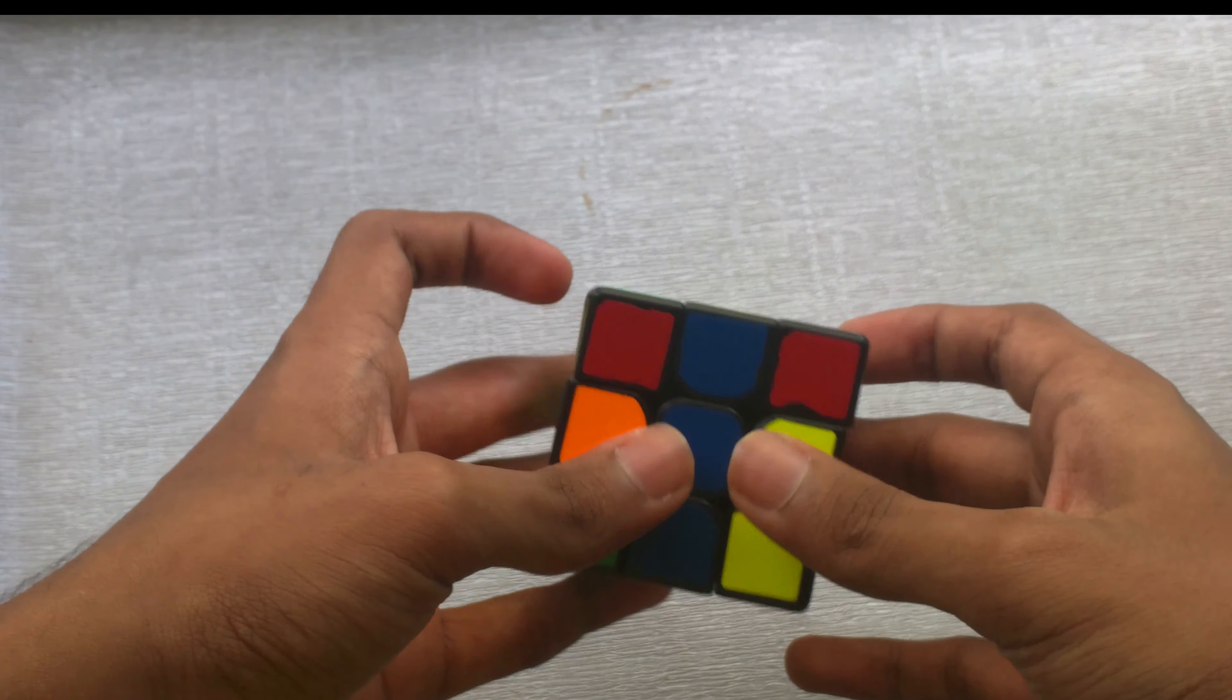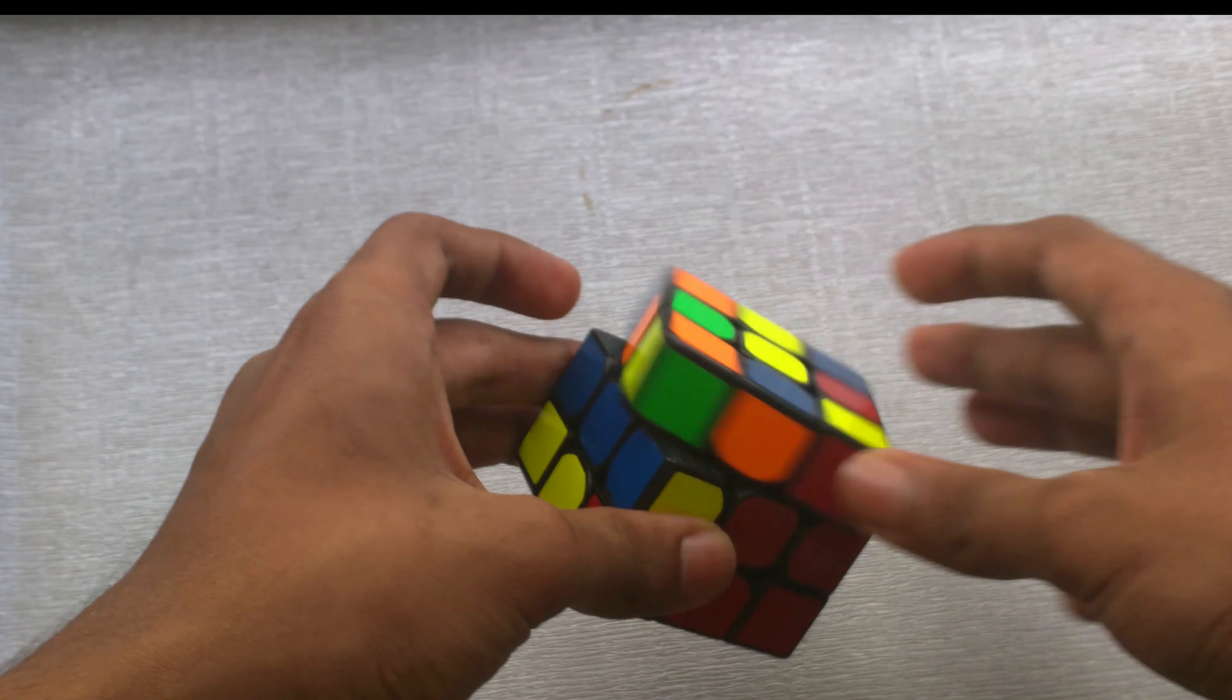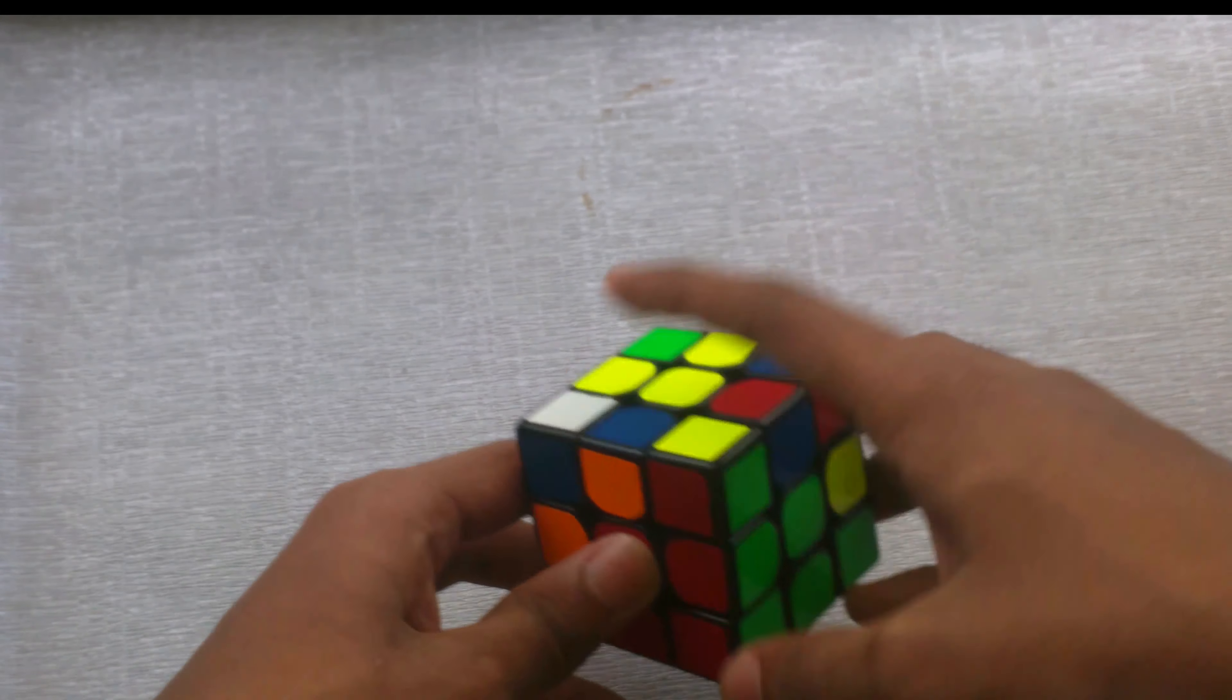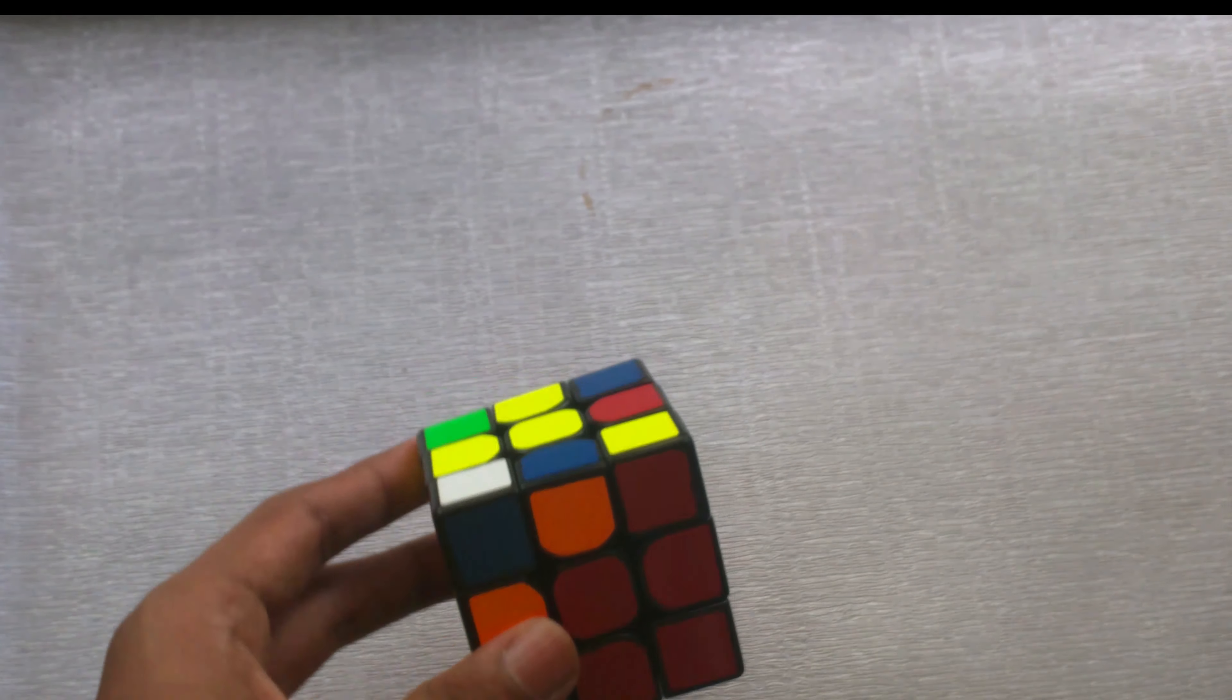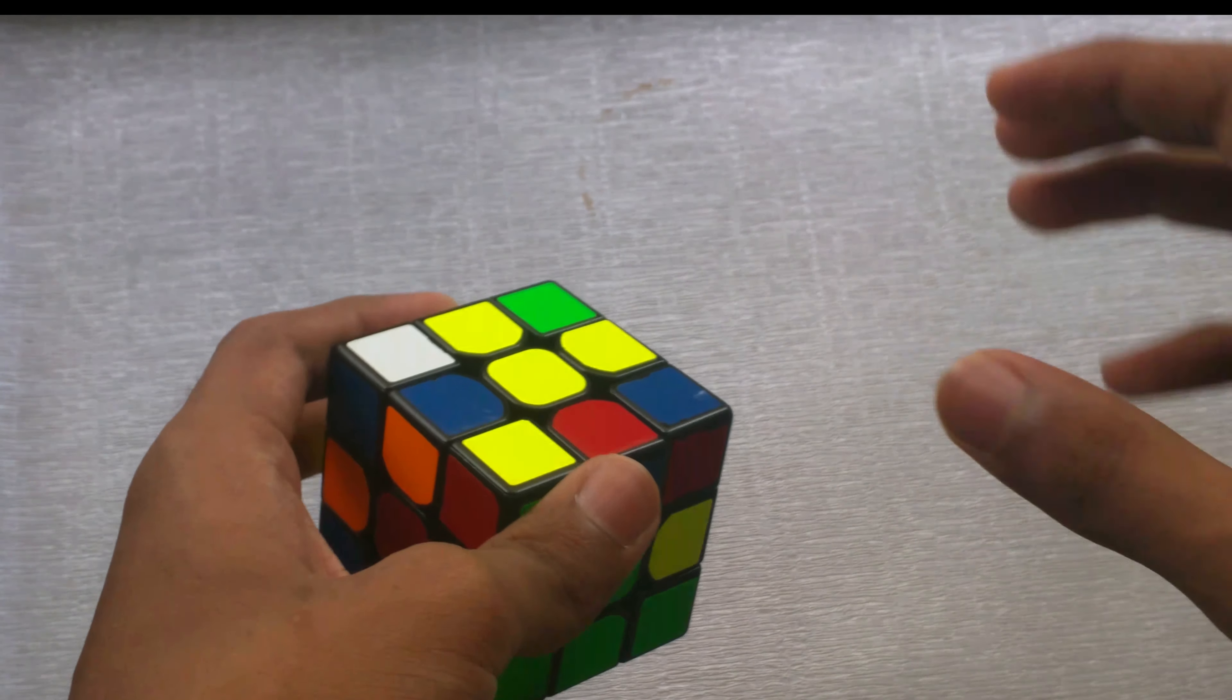So for this, you want to find an empty slot, put this corner down, move this once or twice, and then push it back up. And as you can see, it's separated. So after that, you want to look at the edge, not the corner, the edge...